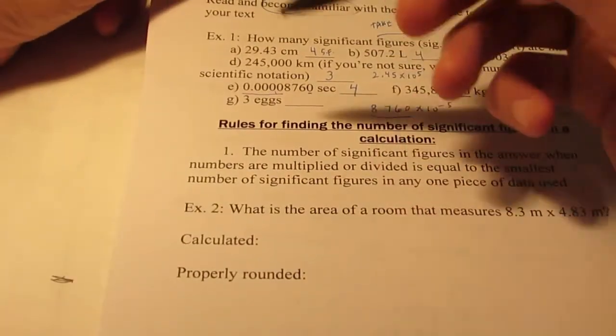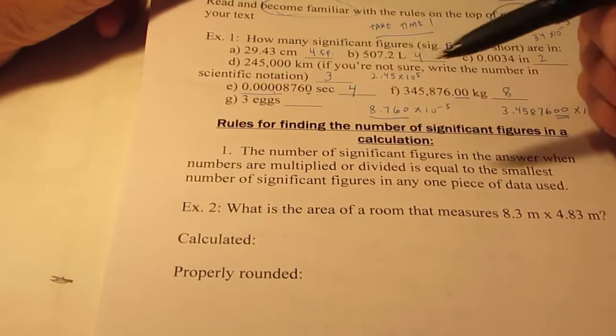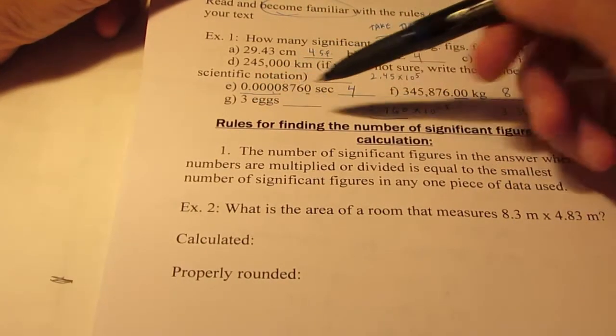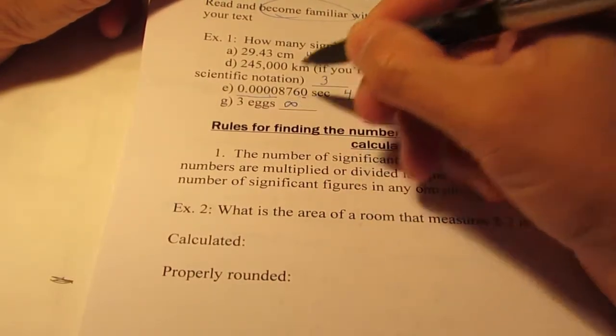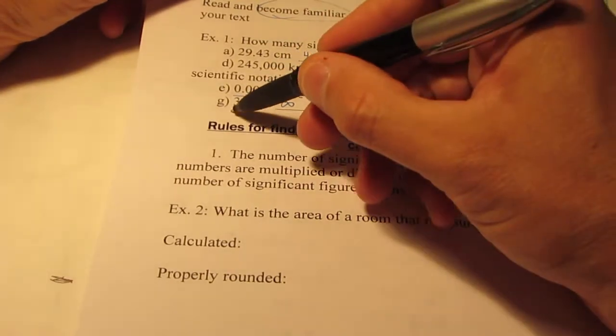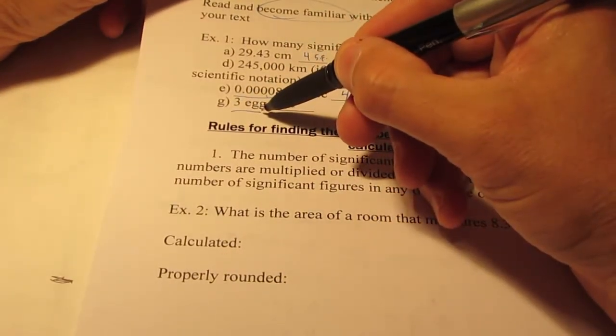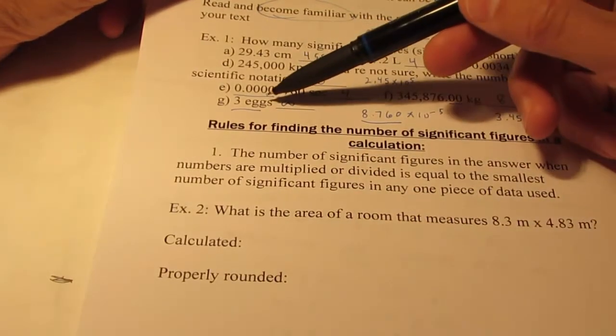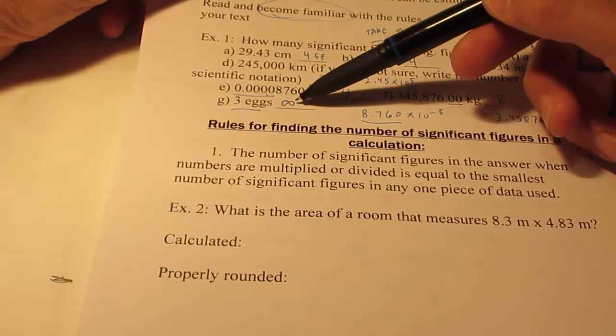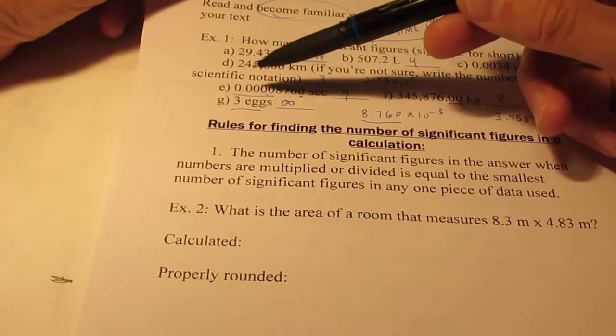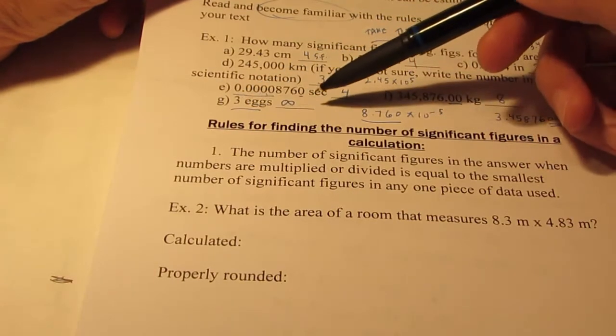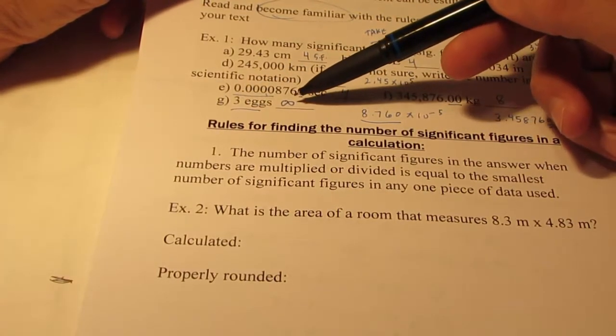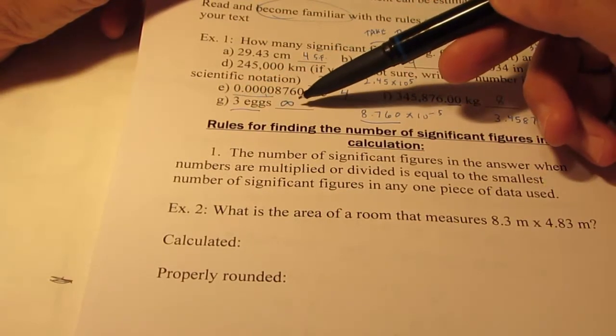Alright. How about letter G? A lot of you would probably say there's one significant figure here, because I would measure three eggs. In reality, this value has an infinite number of sig figs because this is a counted number. Counted numbers are not measurements. Counted numbers have infinite number of significant figures. So if I said there were three eggs, how certain am I that there are three eggs? You're absolutely certain. There's no uncertainty. So a counted number, kiddos, has infinite sig figs. It's not like a measured value.